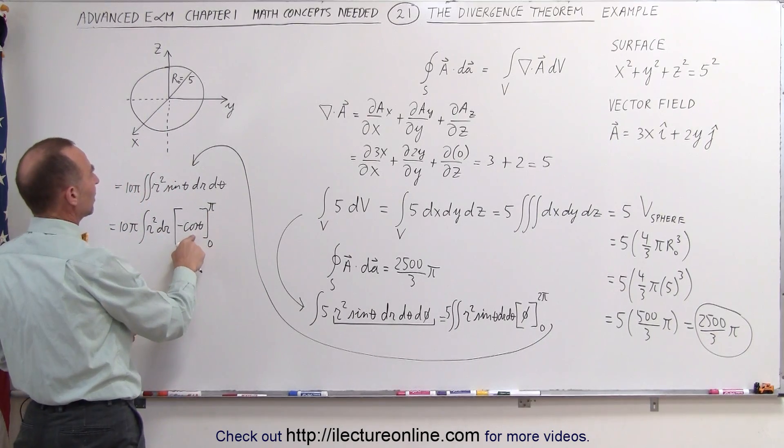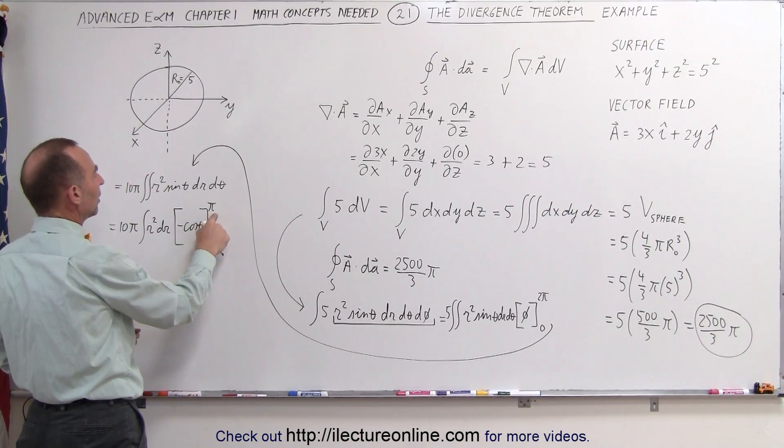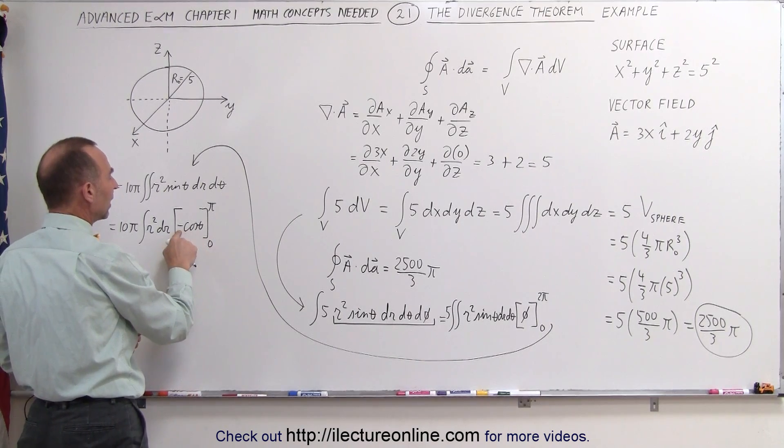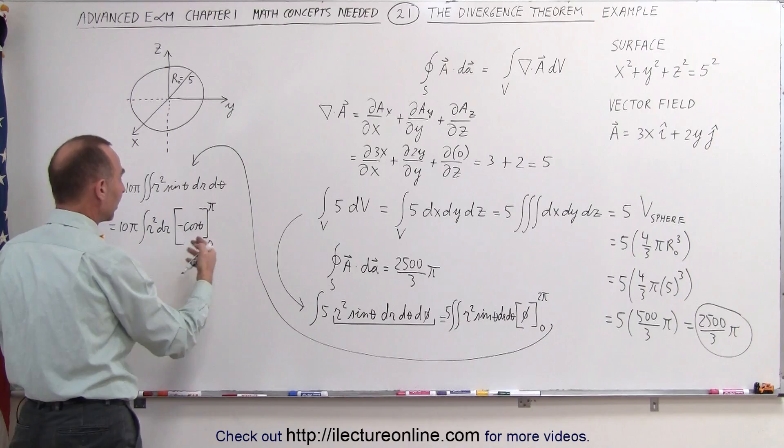We plug in the upper limit, we get the cosine of pi is minus 1, times the minus 1 is plus 1. Plug in the lower limit, minus a minus 1, that's again plus 1, that's equal to 2.